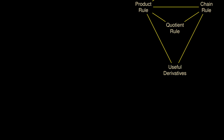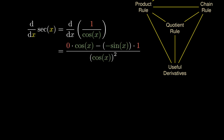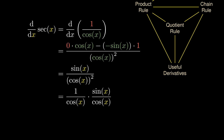Having calculated the derivative of the cosine function, can we calculate the derivative of the secant function? We write secant as 1 over cosine and apply the quotient rule. Differentiating the numerator gives 0, and differentiating the denominator gives negative sine. Simplifying with a little algebra gives 1 over cosine times sine over cosine. This tells us that the derivative of the secant function is precisely the product of the secant and the tangent.